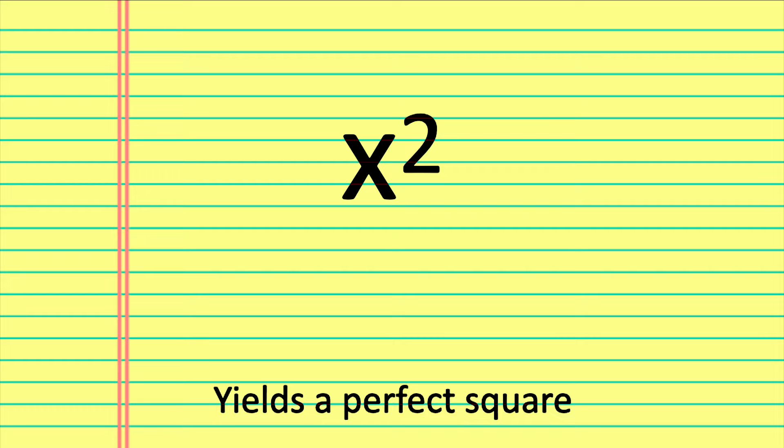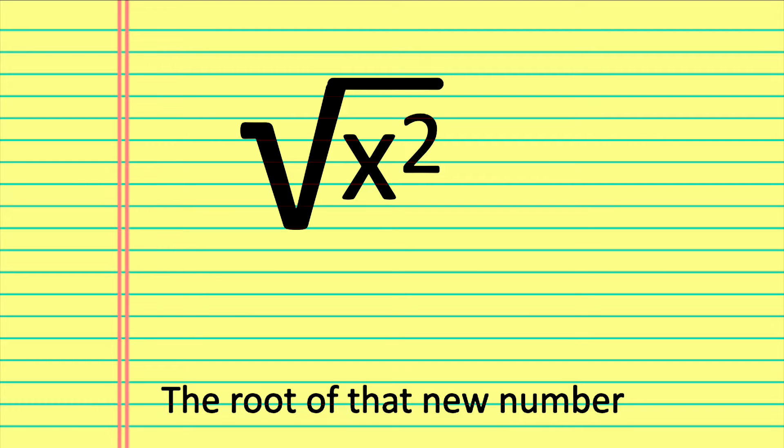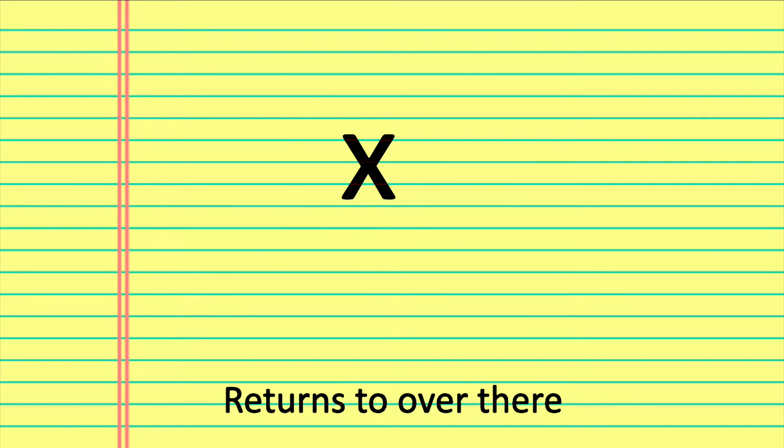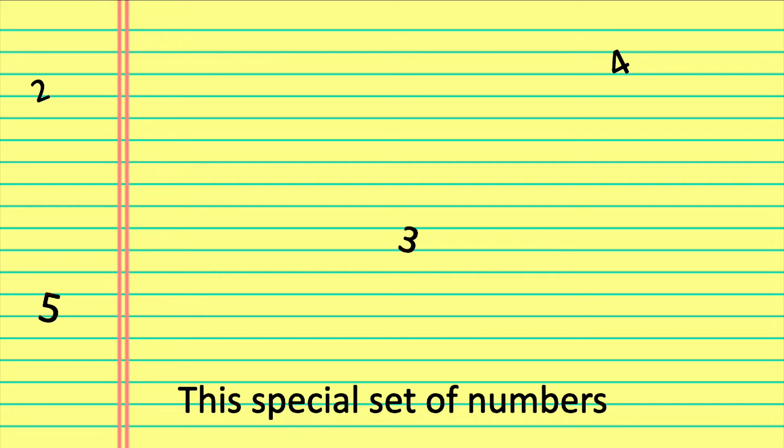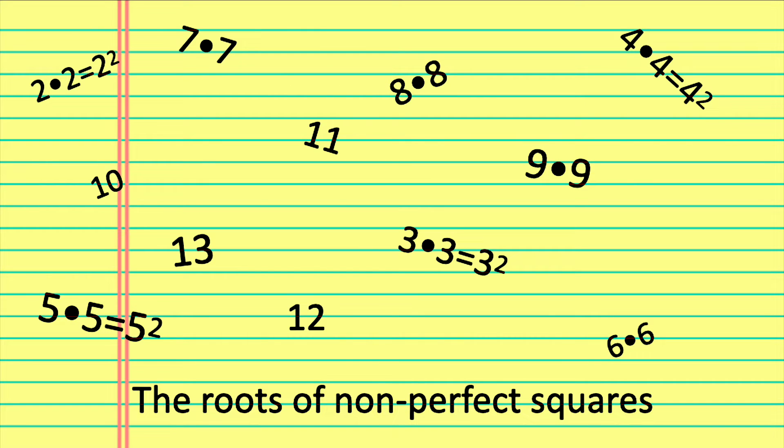A number times itself yields a perfect square. The root of that new number returns to over there. This special set of numbers helps to simplify the roots of non-perfect squares.